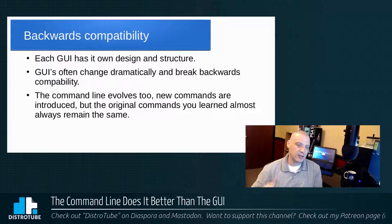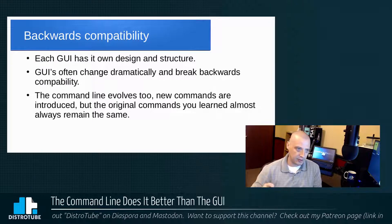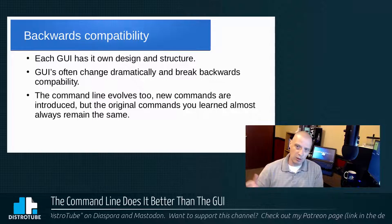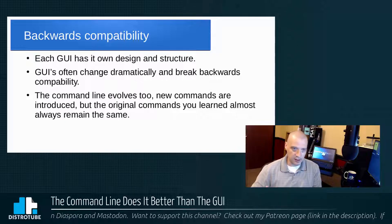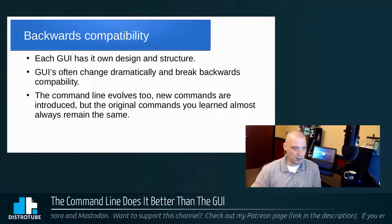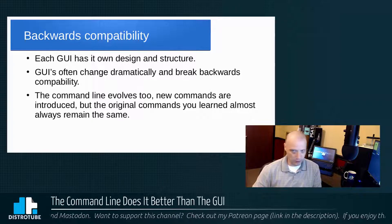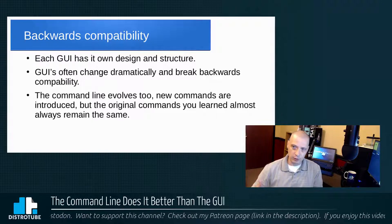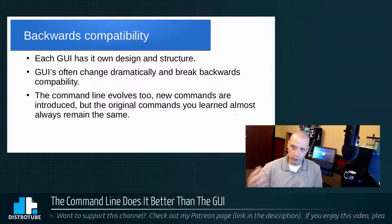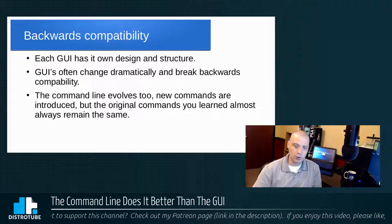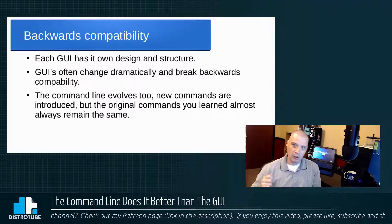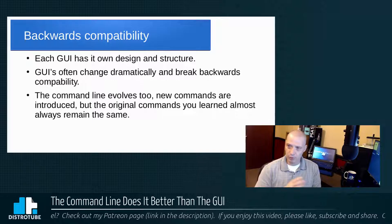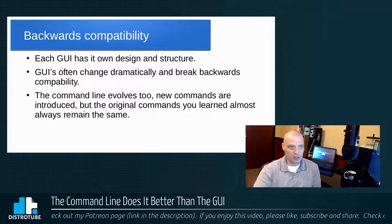Backwards compatibility is another big advantage the command line has. With GUIs, each one has its own design and structure, and they change often and dramatically — most of the time breaking backwards compatibility with previous versions. The command line evolves; new commands are introduced in Bash, for example. But the original commands we learned way back in the day are still there. They remain the same. The shell rarely breaks with backward compatibility.